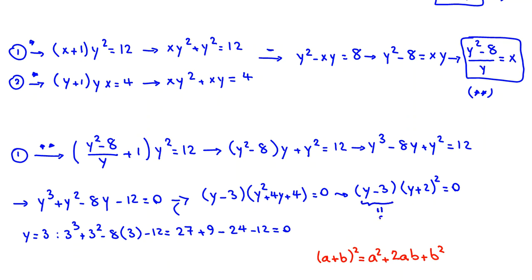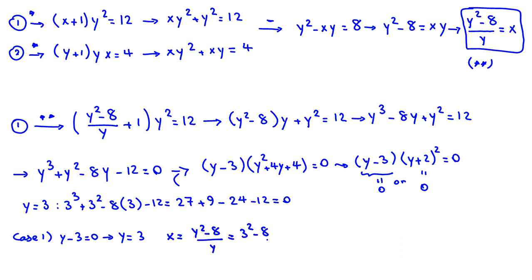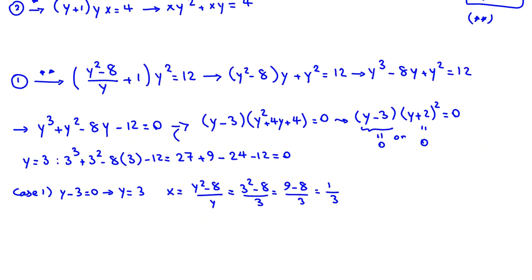Case 1: y − 3 = 0, so y = 3. Then x = (y² − 8)/y = (9 − 8)/3 = 1/3. Since z = y, we also have z = 3. So the first solution is (x, y, z) = (1/3, 3, 3).